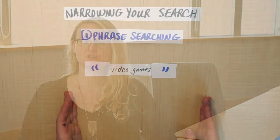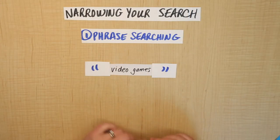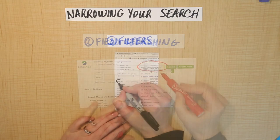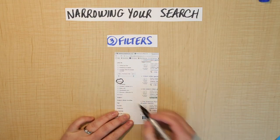After we learned how to expand your search and get more results, we learned how to narrow it back down to the most relevant ones. To do that, we used three different techniques: phrase searching, field searching, and filters.